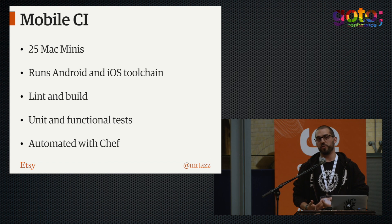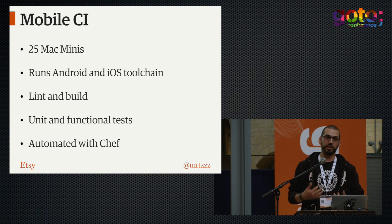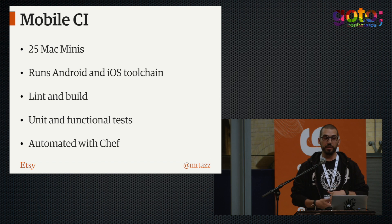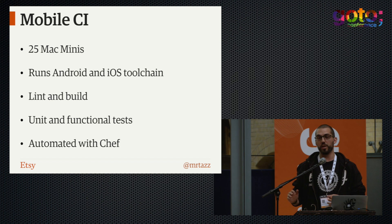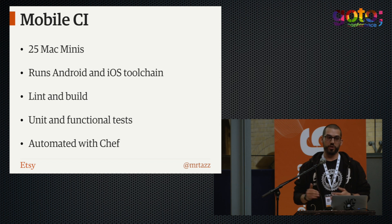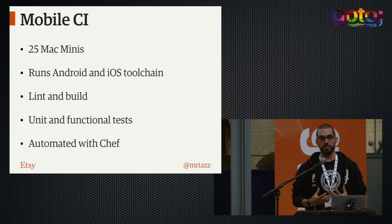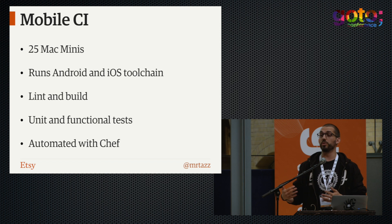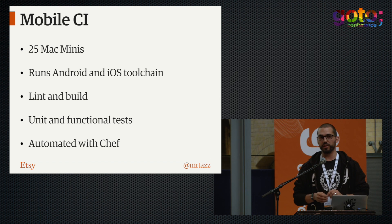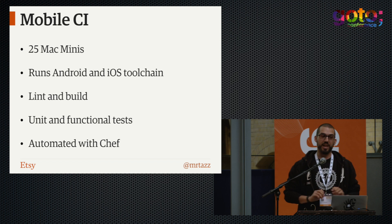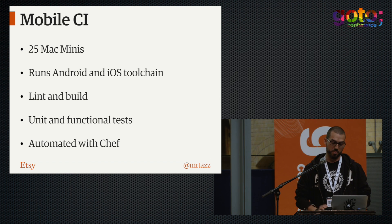It's basically the same for the mobile world, except we don't have LXD containers — we have Mac minis racked up. They run the Android and iOS toolchain. They run lint and builds on each push, so whenever you push to GitHub, we at least run the unit tests, the functional tests, and the linting jobs. This is all automated with Chef. By all, I mean 98%, because it's OS X and not everything in the whole Xcode toolchain can be automated with Chef — there's some stuff you still have to click through.